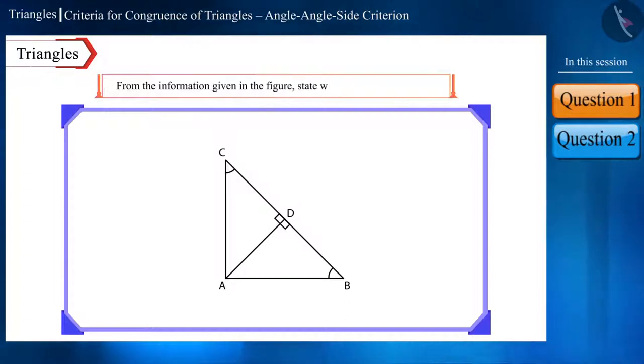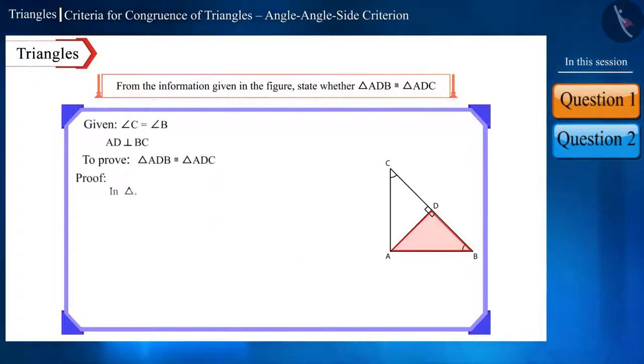From the information given in the figure, state whether these two triangles are congruent. In triangle ADB and triangle ADC, angle ADB and angle ADC are equal because they both are right angles. According to the figure,